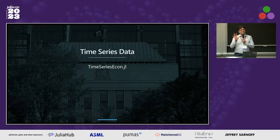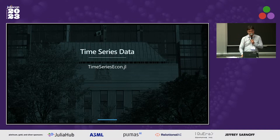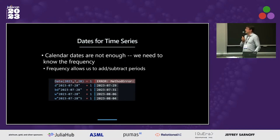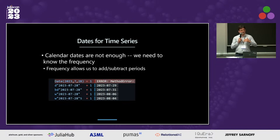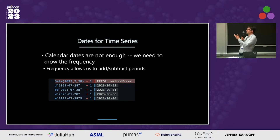The last two examples are not about models, but about working with actual time series data. With time series data, unlike timestamp data, we have a frequency — meaning the distance in time between observations is constant according to the frequency. In order to iterate along the range of a time series, we need to add one to a date repeatedly. If you try to do this with a date from the standard library, it doesn't work because that operation doesn't make sense there — and that's the correct behavior.